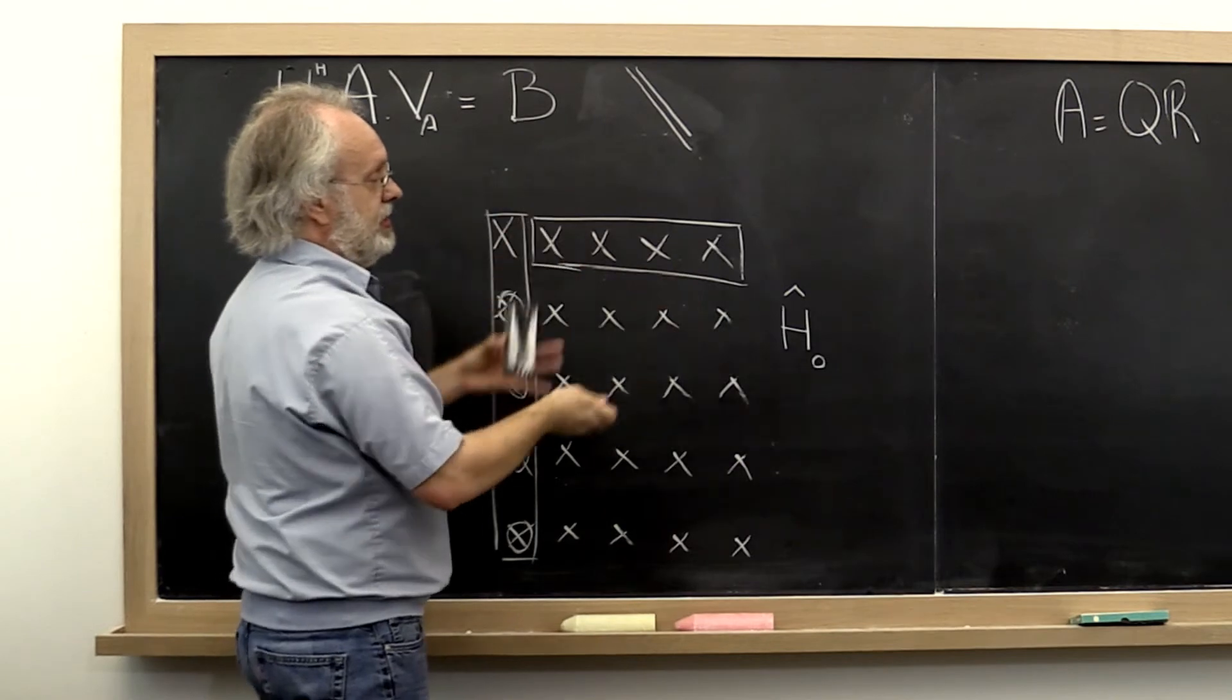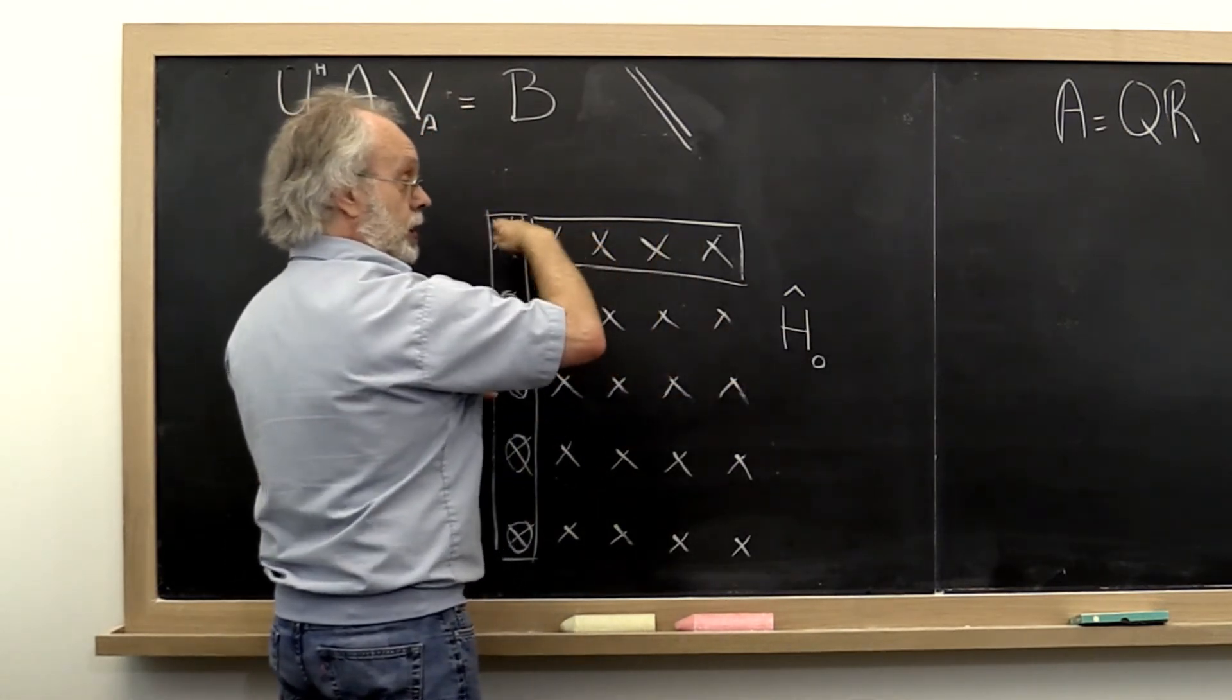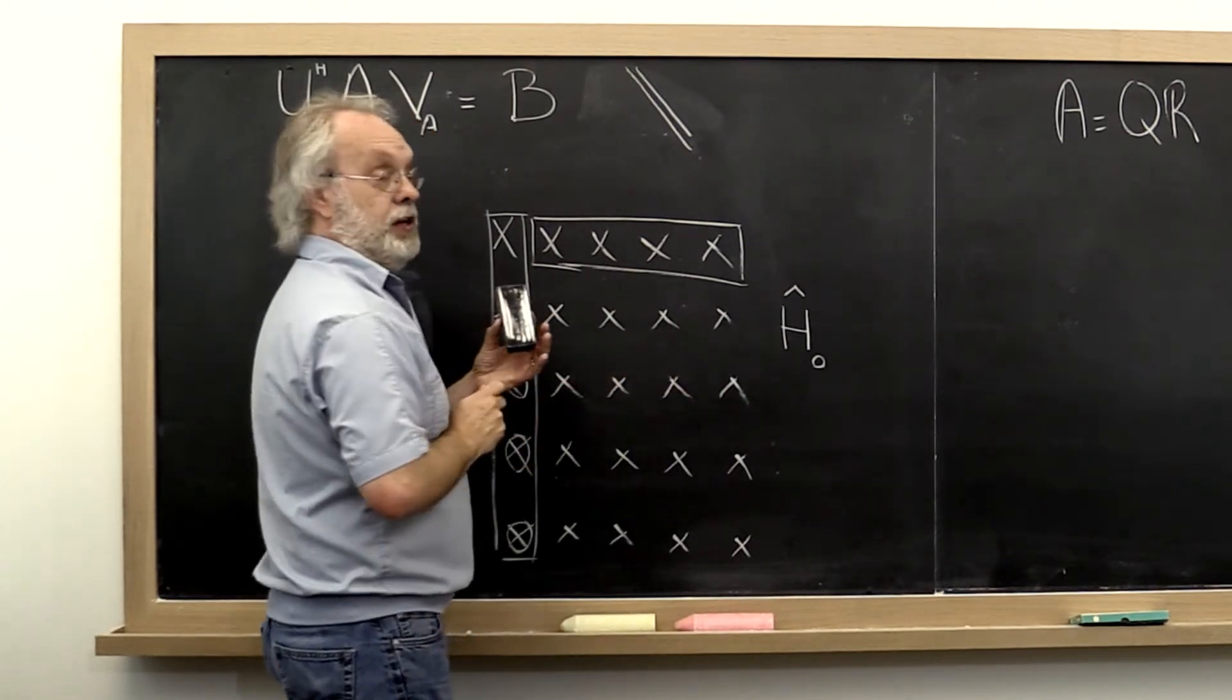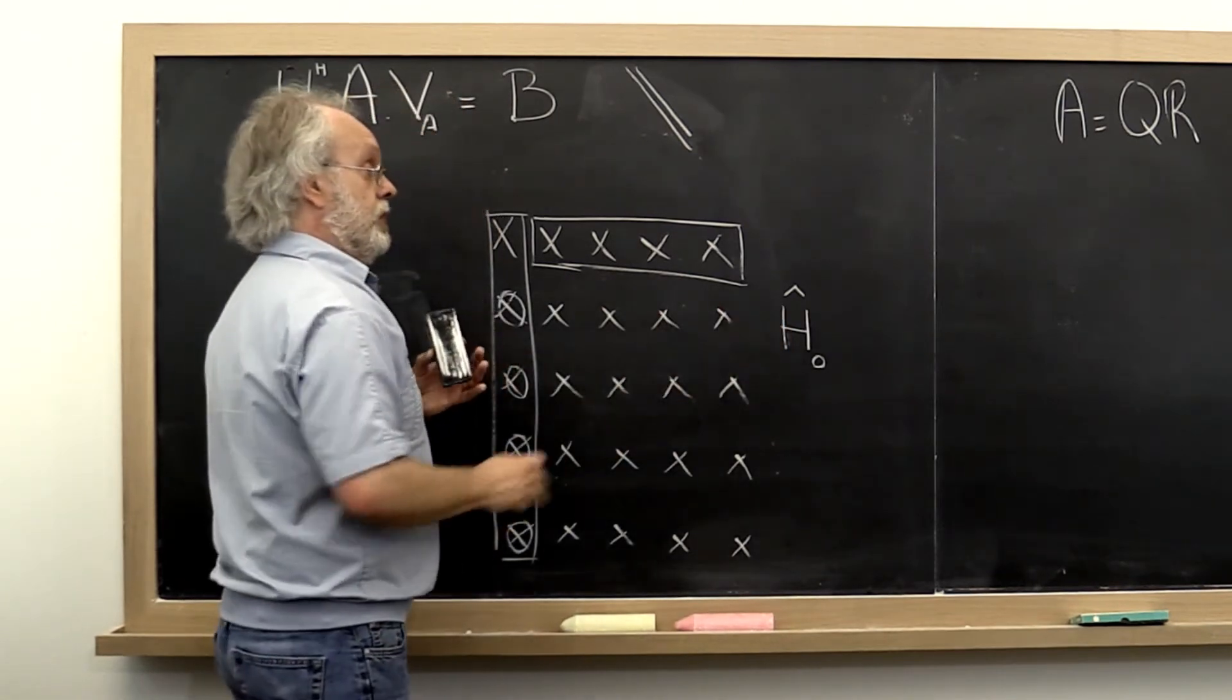Well, it's a row vector, but we can pretend that it's a column vector because when we apply from the right to a row, that's the same as applying the transpose from the left to the column.